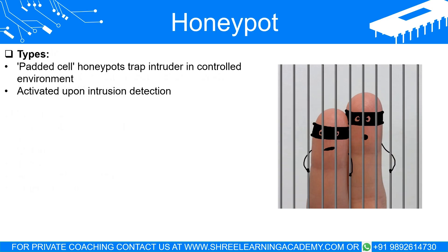A particular type of honeypot is known as a padded cell. These are special honeypots that get activated when an intrusion is detected or when an unauthorized command or software launch is identified. Once activated, they trap the intruder in a controlled environment where they can do no real harm, all the while under the watchful eye of the network administrator.